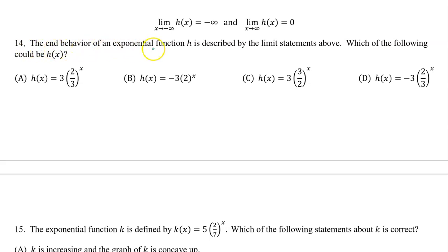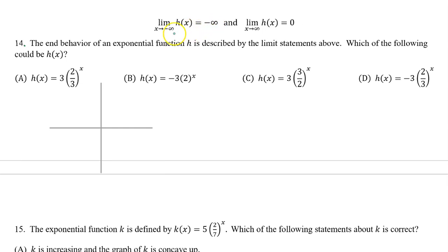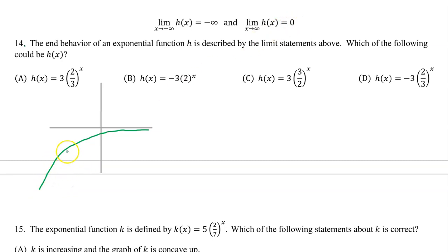Number 14. The end behavior of an exponential function h is described by the limit statements above. Which of the following could be h(x)? Let's use the limit statements to draw a sketch of the exponential function. The limit as x approaches negative infinity of h(x) equals negative infinity. This means as we go to the left, h(x) is falling. So that curve is going to look something like this — as we go towards the left, the function is falling. Automatically, I have drawn it so that the limit as x approaches infinity of h(x) equals zero; notice that as we go to the right, h(x) is approaching zero. So we can make our answer choice based on this graph.